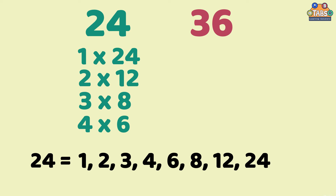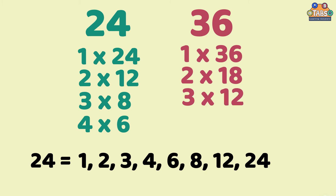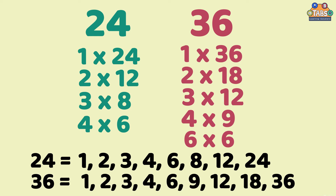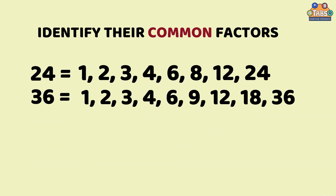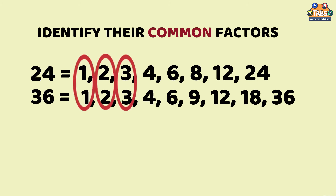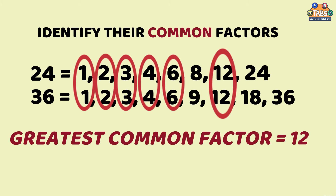Then for 36, let us get the factors: 1 and 36, 2 and 18, 3 and 12, 4 and 9, and 6 and 6. Therefore, 36 has 1, 2, 3, 4, 6, 9, 12, 18, and 36 as each factor. Let us identify their common factors, which are 1, 2, 3, 4, 6, and 12. The greatest common factor is 12.